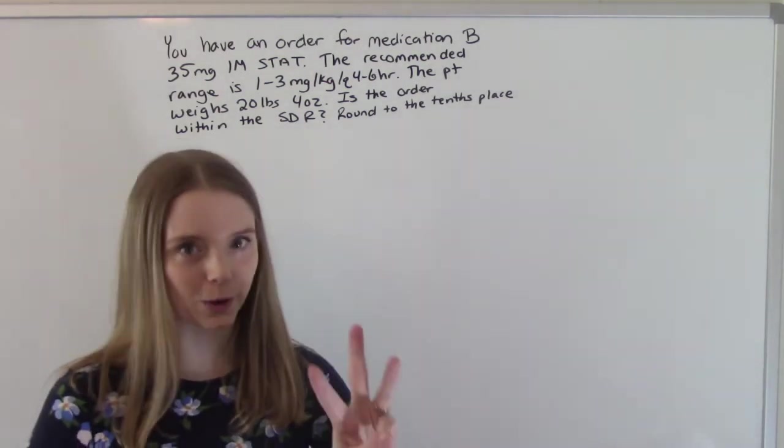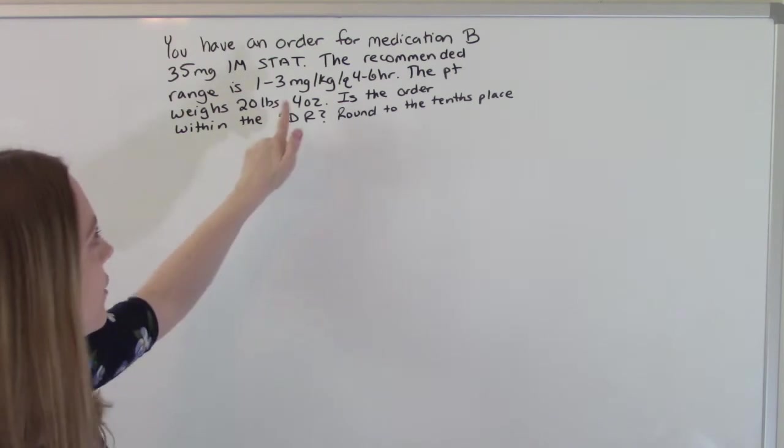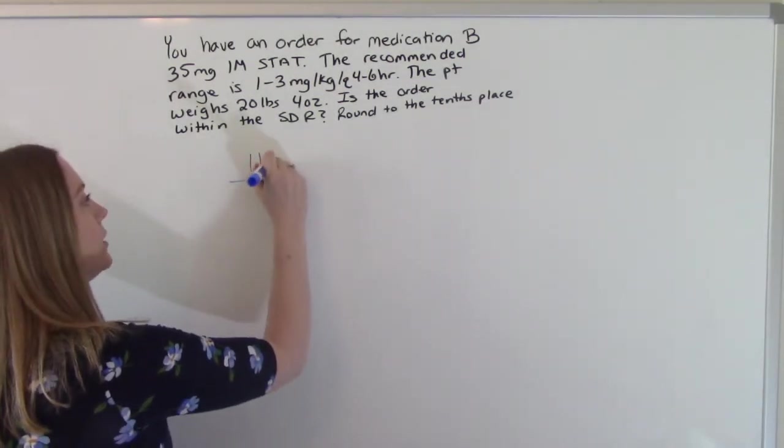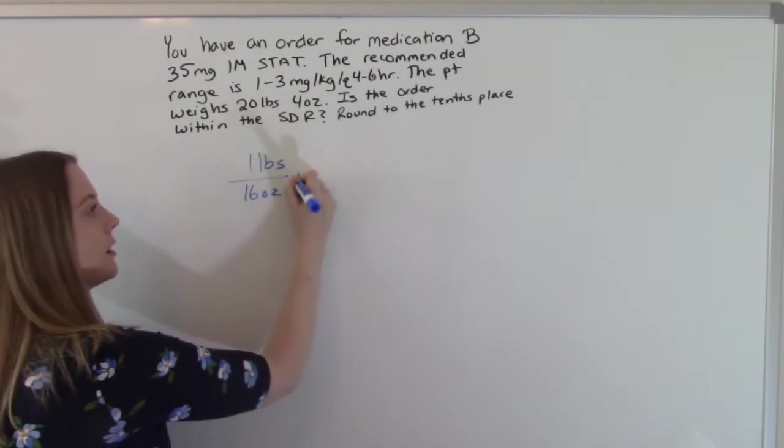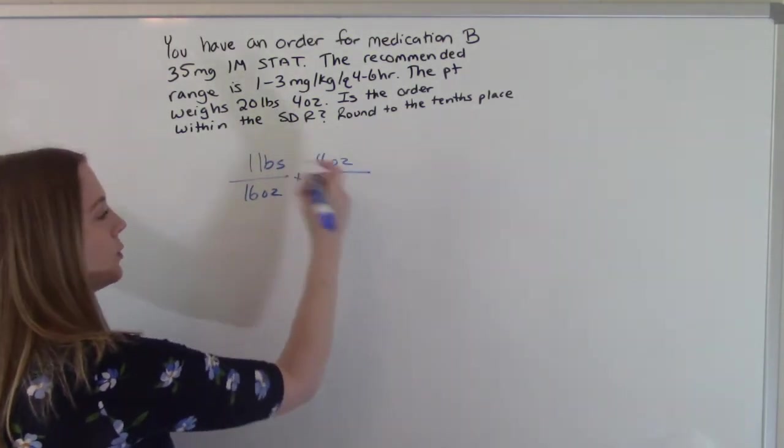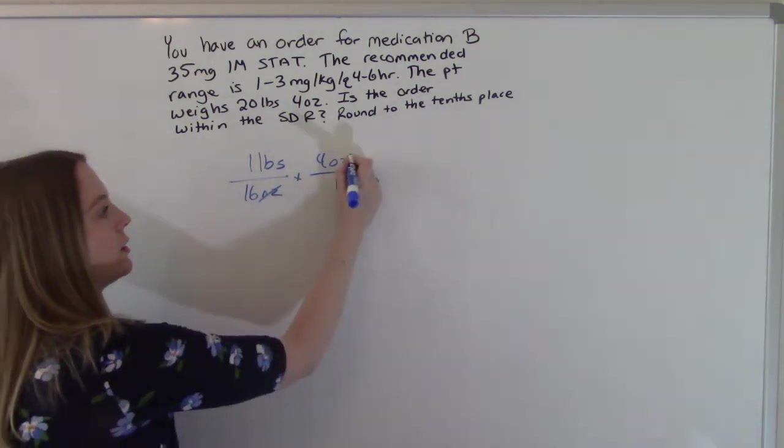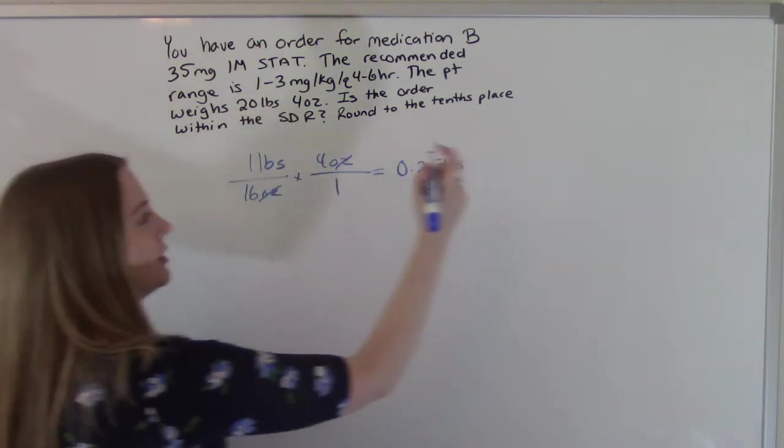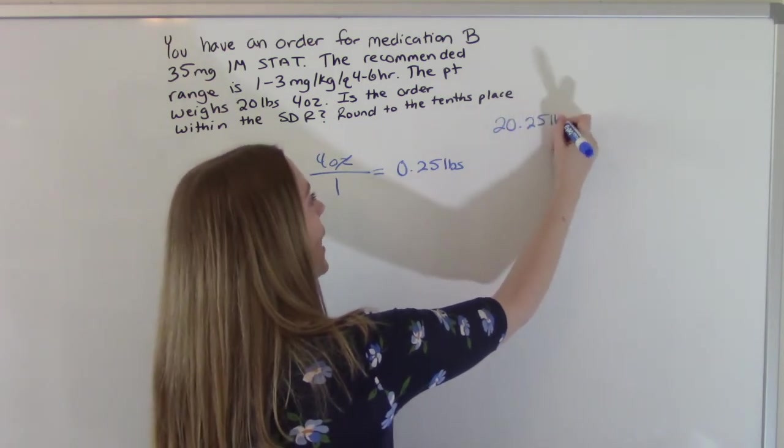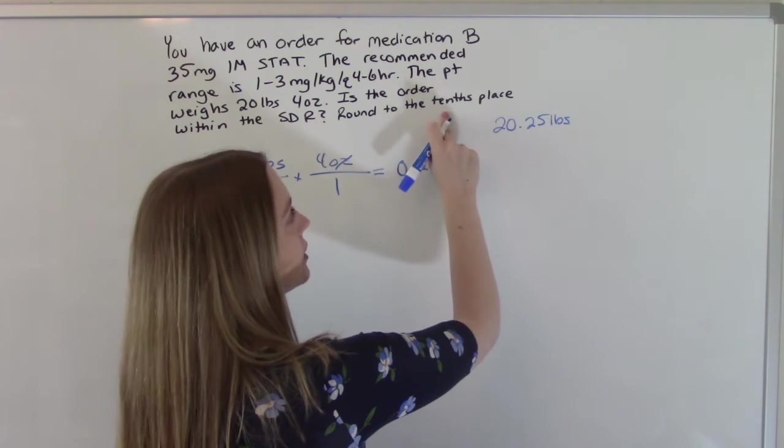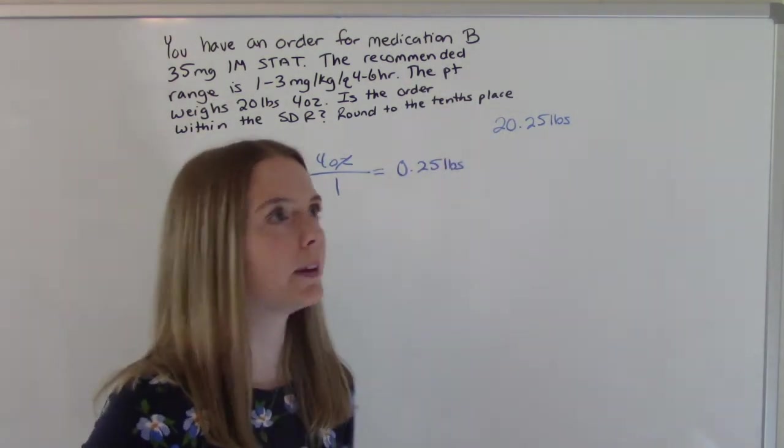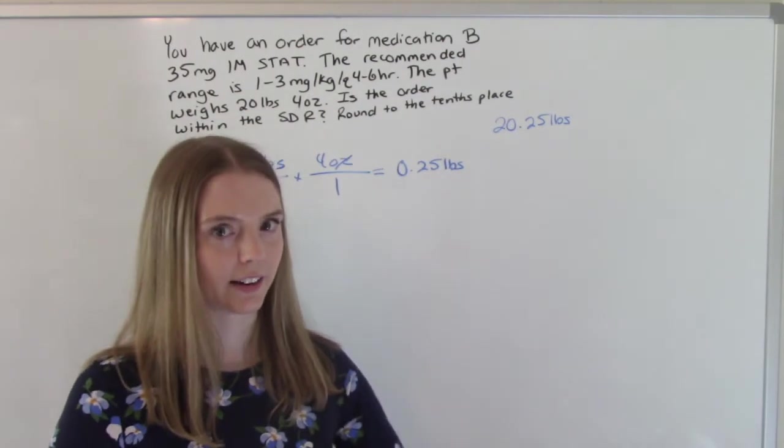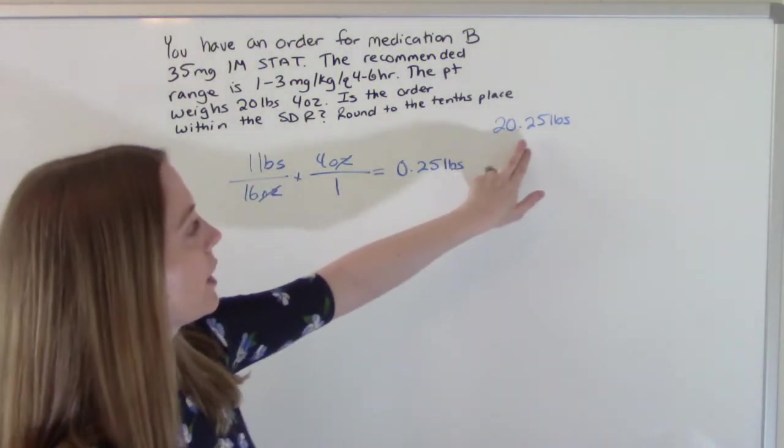So for this one, we're actually doing three equations. The first of which is we need to convert these ounces to pounds because we can't do the math like this. So one pound is 16 ounces. Our little one weighs four ounces, 20 pounds, four ounces. So the ounces will cancel and this will give us 0.25 pounds. So our patient is now 20.25 pounds. And we're not going to round yet. You want to round to the tenths place when we're all done. This is very important because obviously this is a child and we want to be very safe when we give meds to a child. So we don't round until the very end.